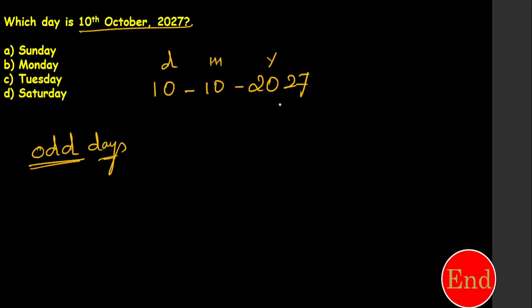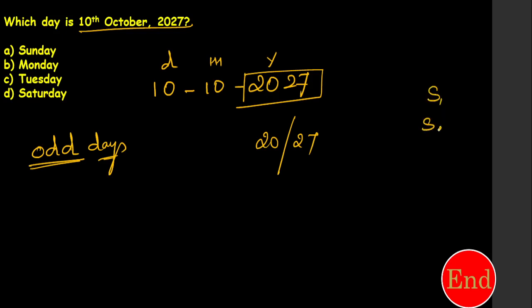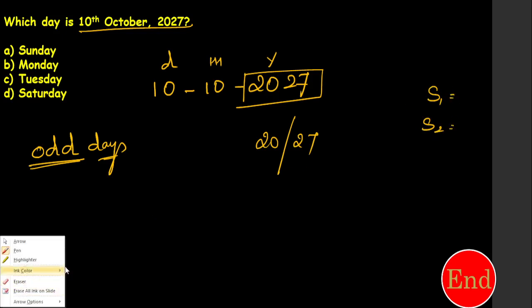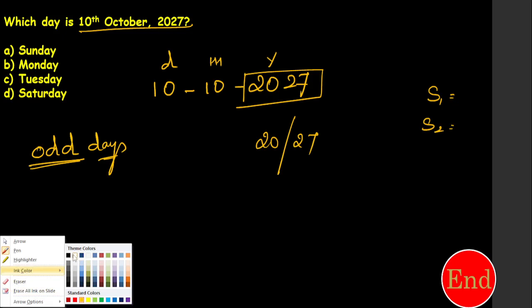If you are new to this calendar topic, it may be a little difficult at first. But in class I explained everything clearly. So first I take the year 2027 and split it into two parts: the century part (20) and the remaining (27). I will find odd days for 27 in two steps.